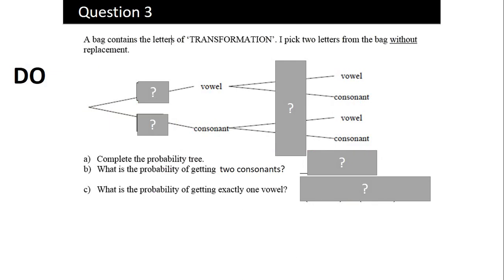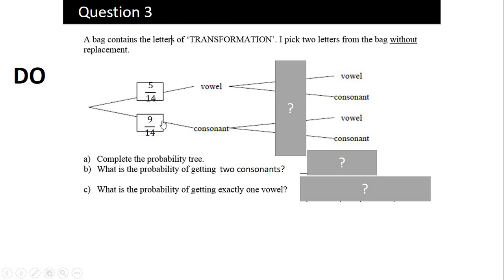Pause the video and have a go at completing the probability tree and finding the probabilities for parts B and C. So a bag contains the letters of the word TRANSFORMATION — 14 letters altogether. We pick two letters without replacement. The vowels A, E, I, O, U — there are five of them, so the probability of picking a vowel is 5/14. The rest are consonants: 14 minus 5 means nine consonants, so 9/14 for a consonant. These add to 14/14.